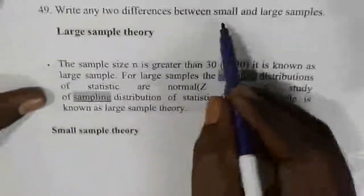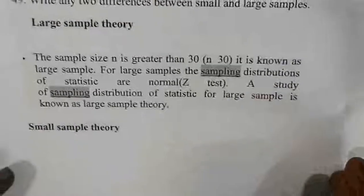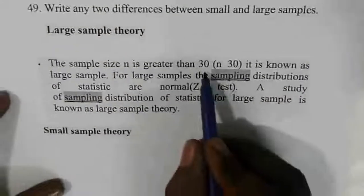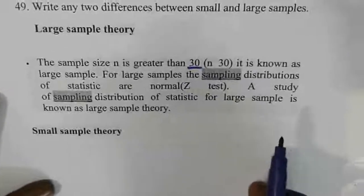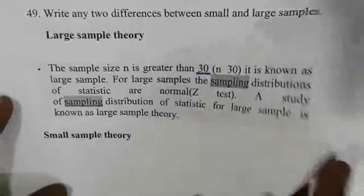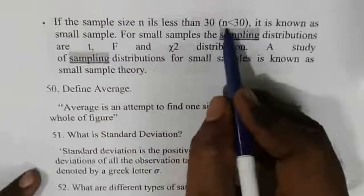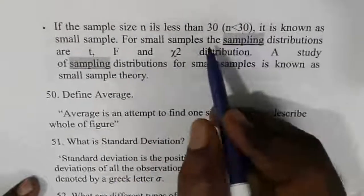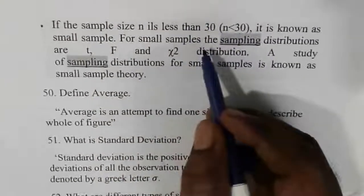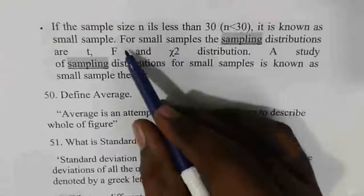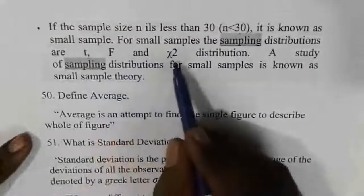Difference between large and small samples: large sample has size greater than 30. Small sample has size less than 30 (n < 30). Tests for small samples include the T test, F test, and Chi-square test. For large samples, the Z test is used.